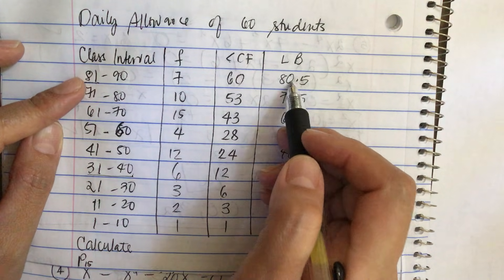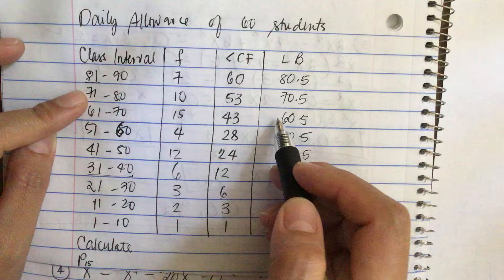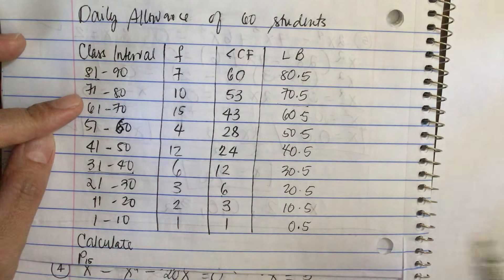Divide 2 equals 80.5. 71 plus 70 divide 2 is 70.5, and so on.